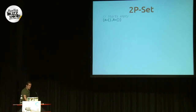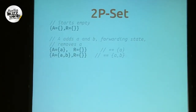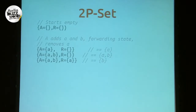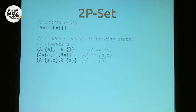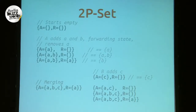Let's look at what that looks like. You start empty with the adds and removes, which are each grow-only sets. Then A adds element A and starts forwarding state, and also removes A. You can see that A is first a member, then A and B are effective members, and then when A is removed, B is the effective member of the set. Down below, B adds C in its local copy. It has only C in its set, and then we start merging. A receives the add of C from the B replica and merges with set unions. Finally B receives the adds from A and the remove, and they come out with the converged state of just B and C.